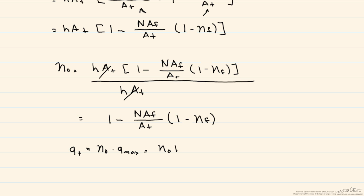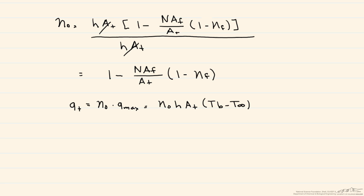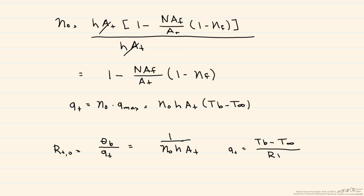From a thermal circuit standpoint, the resistance equals theta sub B divided by Q sub T, so Q sub T equals T_B minus T infinity divided by this resistance. That seems straightforward, but it becomes very handy when we have more resistances than just a fin.